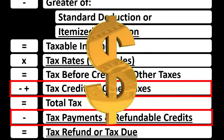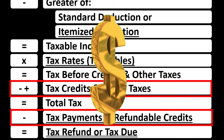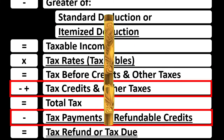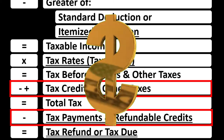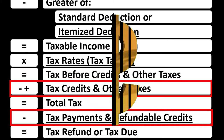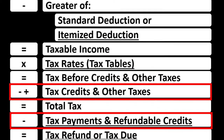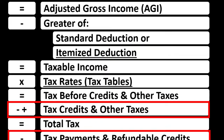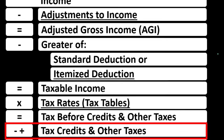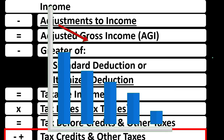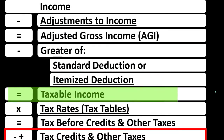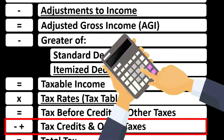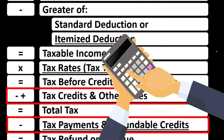Noting that both credits and deductions are good, but if you had a dollar credit versus a dollar deduction, the credit is typically better because you would generally get the full dollar's worth on the credit, as opposed to a dollar of deduction, which would be a dollar decrease to taxable income, then tax being calculated on it.